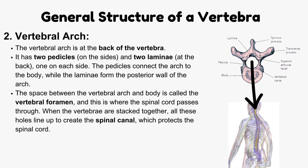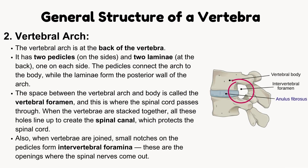When vertebrae are stacked together, all these holes line up to create the spinal canal, which protects the spinal cord. Also, when vertebrae are joined, small notches on the pedicles form intervertebral foramina — the openings where the spinal nerves come out.